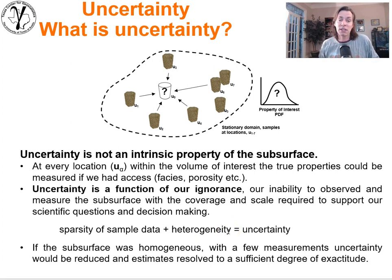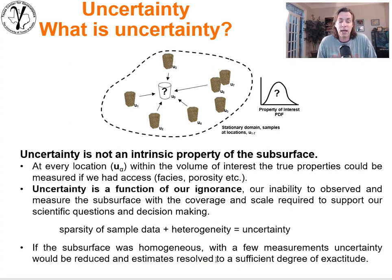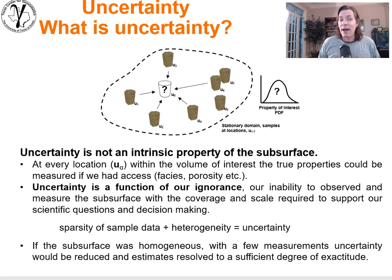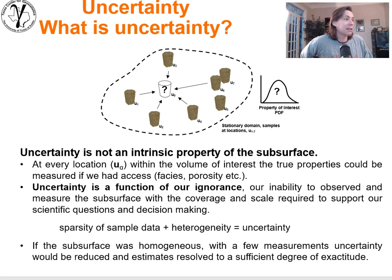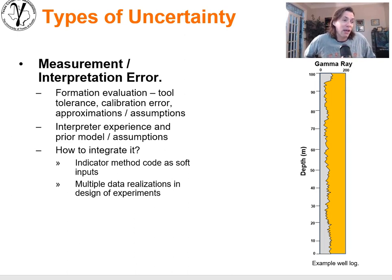You could imagine if the subsurface were homogeneous, with just a few or even a single measurement, uncertainty would immediately vanish — we'd know what was going on at all locations away from that sample. But our earth, in all of its grandeur, is quite an amazing, heterogeneous, complicated system to understand. That makes it fun, but we have to live with it.